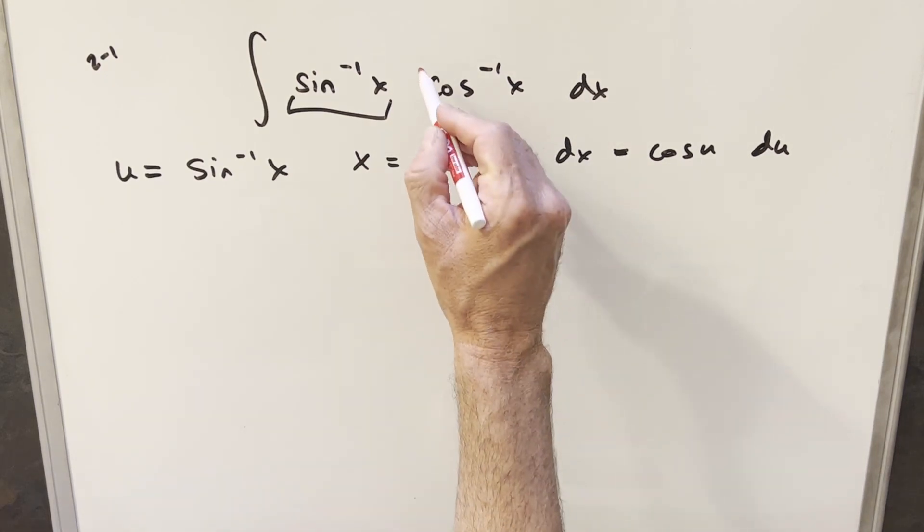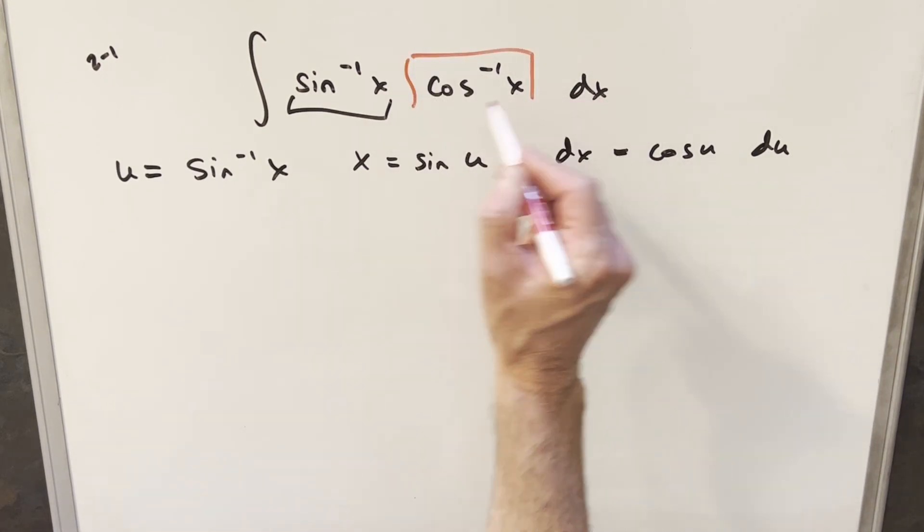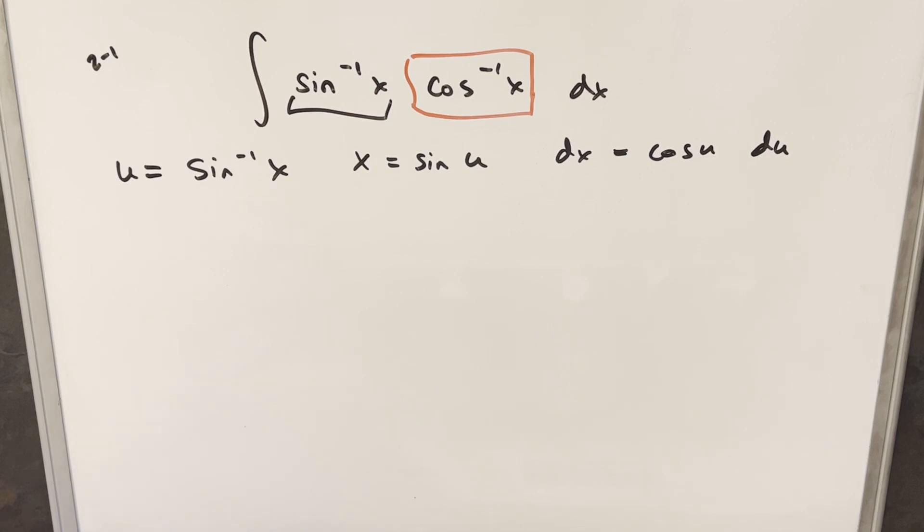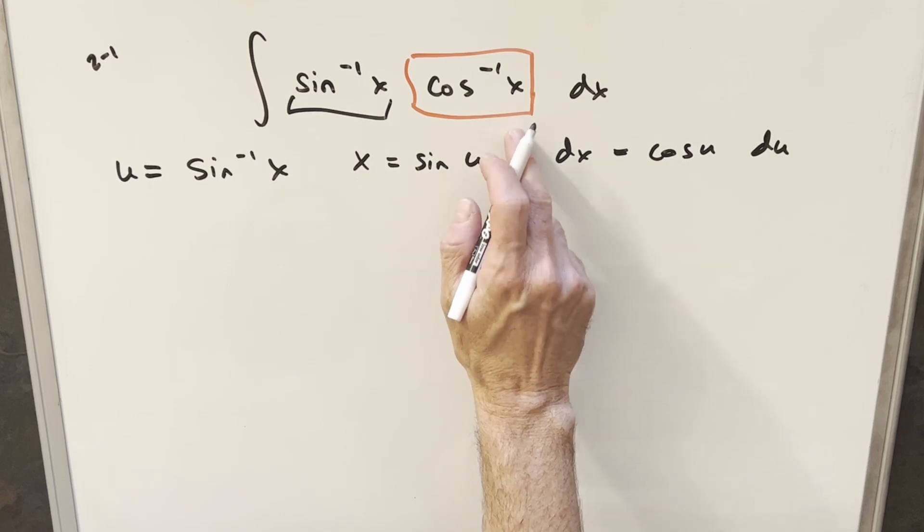Now the one thing I don't have is a value for arccosine, but I can find that. This arccosine is actually the key to the whole method. So what I want to do is use an identity that's going to help us find a value for this.